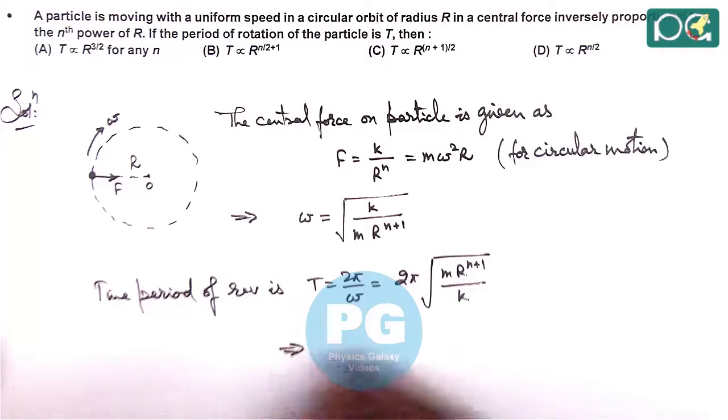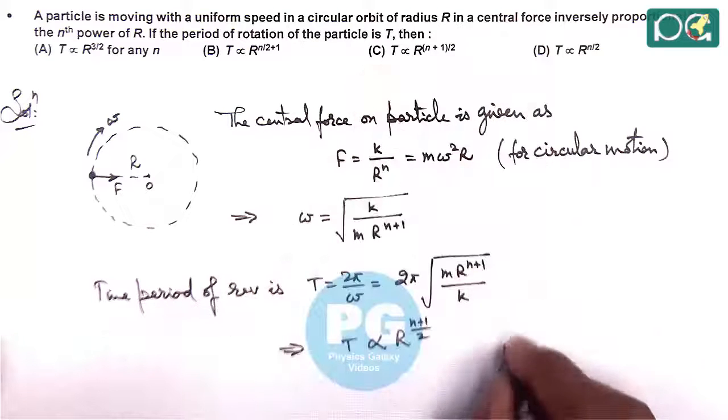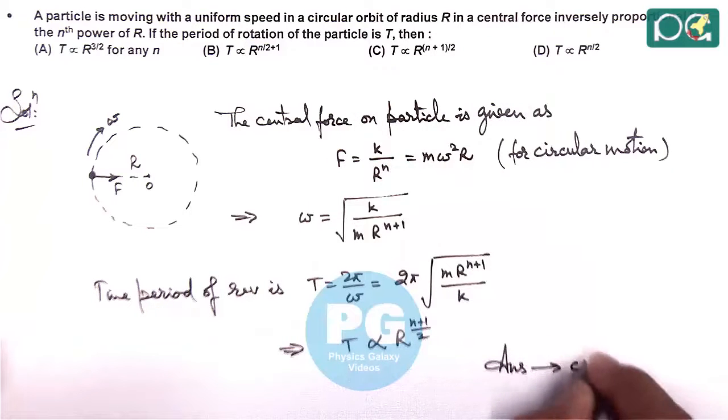So here we can see the time period is directly proportional to r to power n plus 1 by 2, which matches with option c here. So the answer to this question is option c.